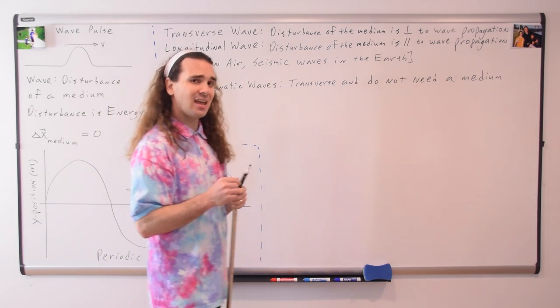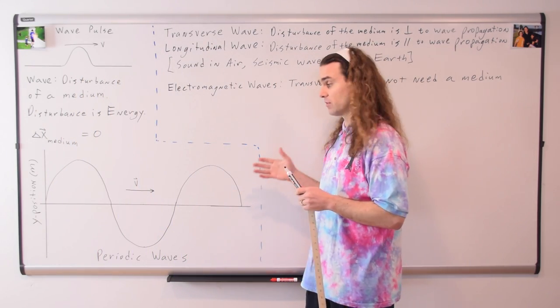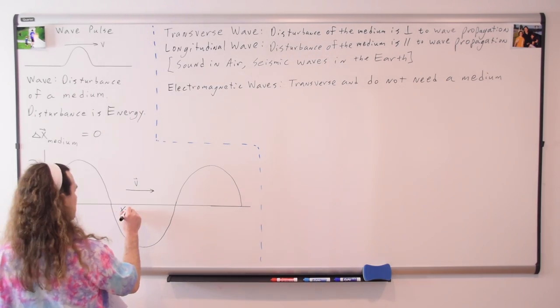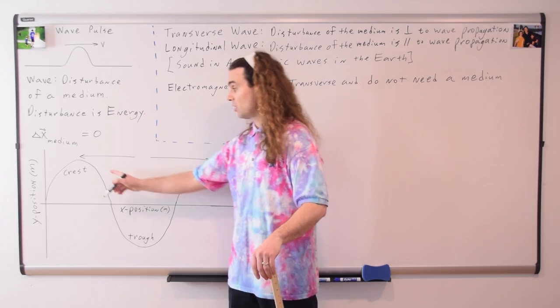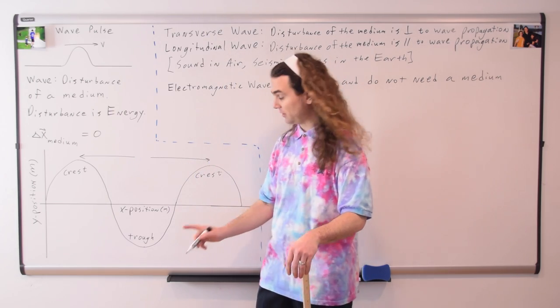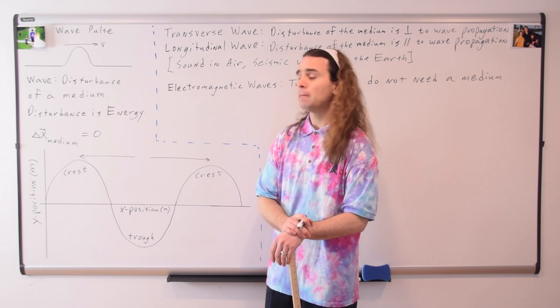Now let's take a closer look at this graph of a periodic transverse wave. The top part of a wave is called a crest, the bottom part is called a trough, and the distance between two successive crests is called the wavelength. The symbol for wavelength is a lowercase lambda, and the height of a crest or the depth of a trough is called the amplitude.